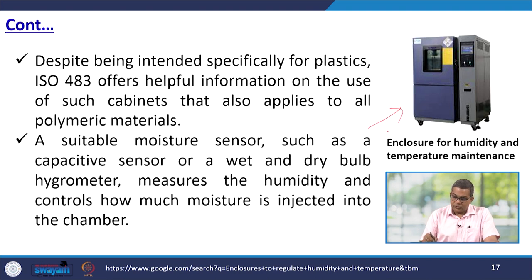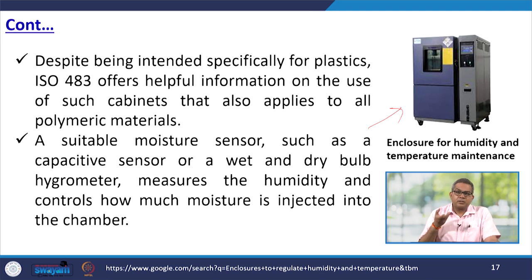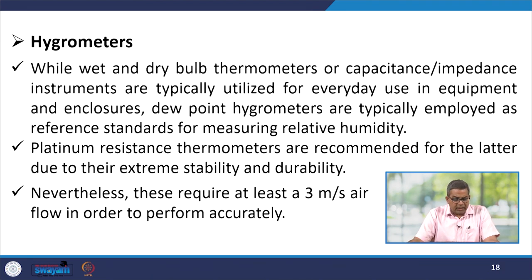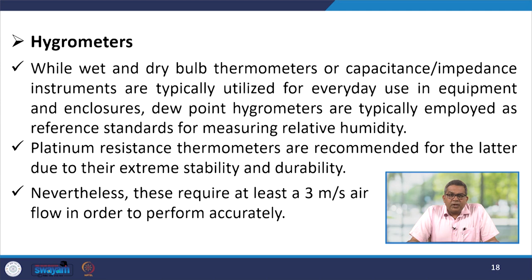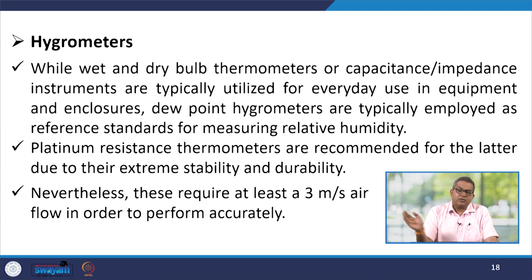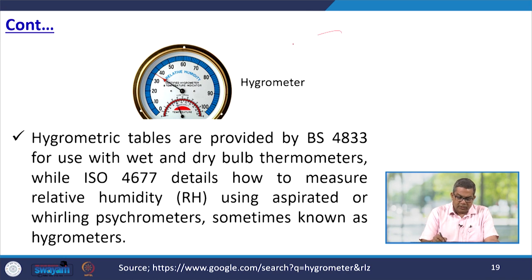Here we have shown a photograph of the enclosure for humidity and temperature maintenance. Suitable moisture sensors must be employed, like capacitive sensors or wet/dry bulb hygrometers, which measure the humidity and control how much moisture is injected into the chamber. Wet and dry bulb thermometers or capacitance impedance instruments are typically utilized for everyday use. The dew point hygrometer is typically employed as a reference standard for measuring relative humidity. Platinum resistance thermometers are recommended due to their extreme stability and durability, and they require around 3 meters per second airflow for accuracy.